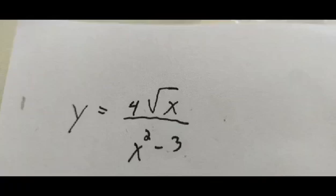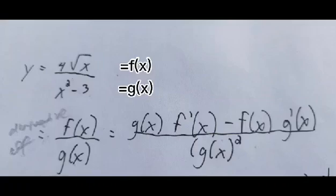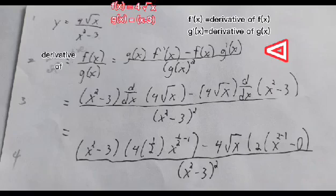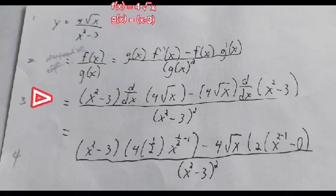To solve the problem, let 4 times square root of x be fx and let x squared minus 3 be gx. We use the formula: derivative of fx over gx equals gx times derivative of fx minus fx times derivative of gx, all over gx squared. Then we substitute them where fx equals 4 times square root of x and gx equals x squared minus 3.